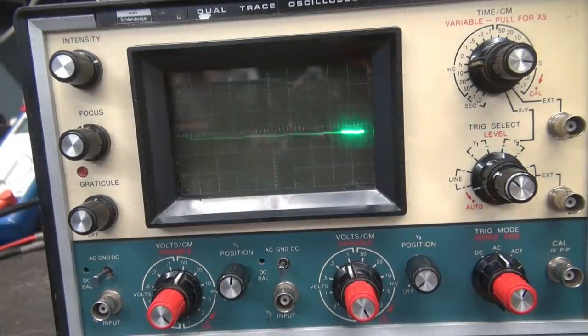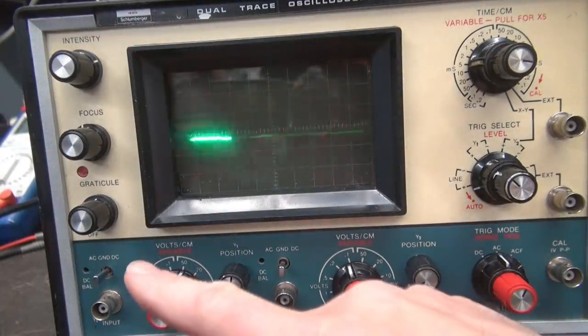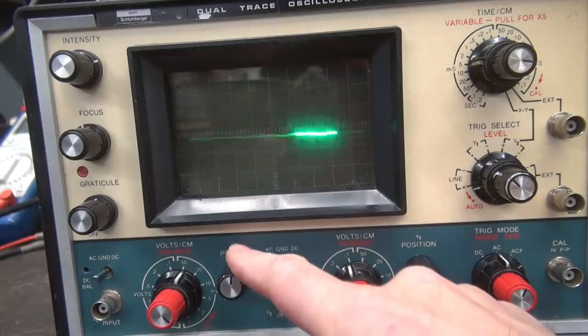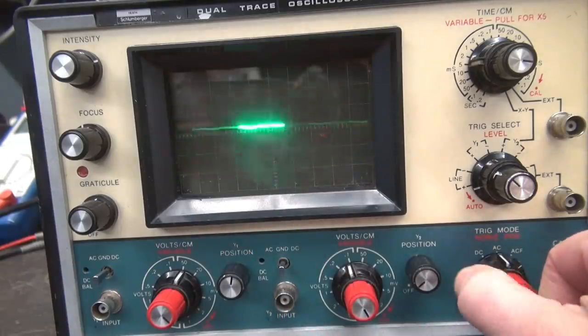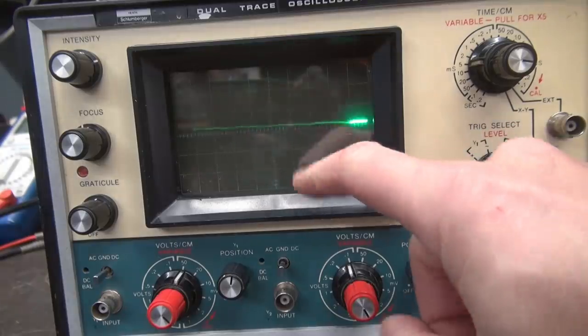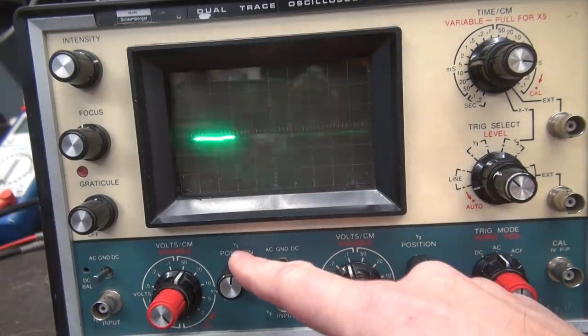Here she is idling. I have no signal applied and the input is at ground. There's my vertical position. There's my horizontal position. But if you take a look, there's noise in that trace.